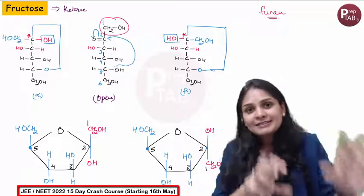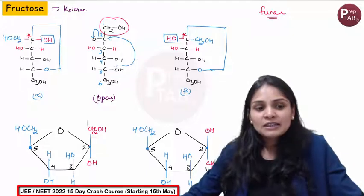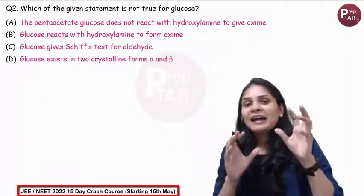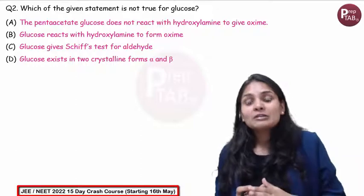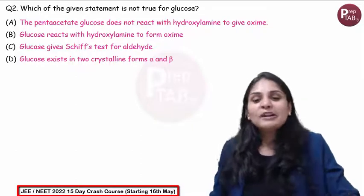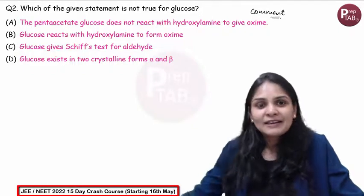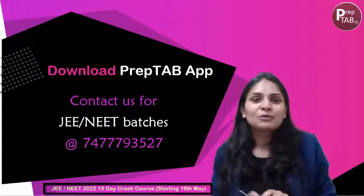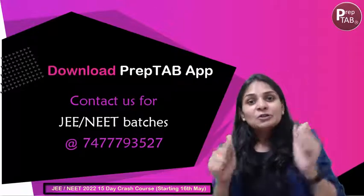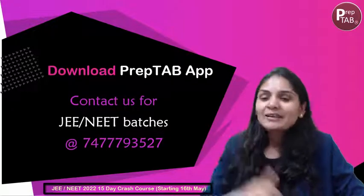So these are the cyclic forms of glucose and fructose. Now again have a look at this question, try to answer it yourself, and let me know in the comment section what the right answer is. I hope this video was helpful for you guys. Don't forget to download our app. Good luck, all the best!